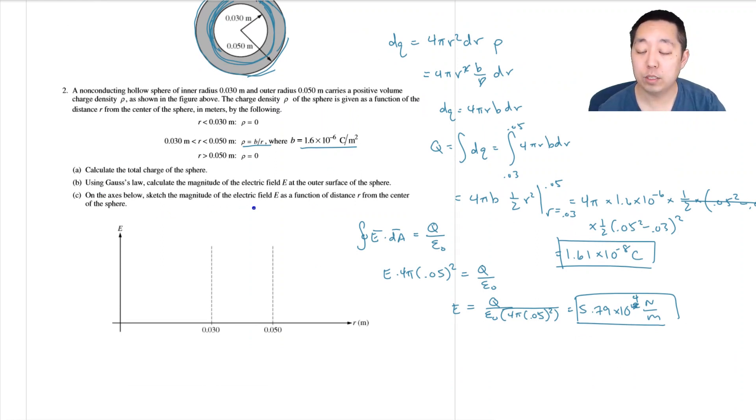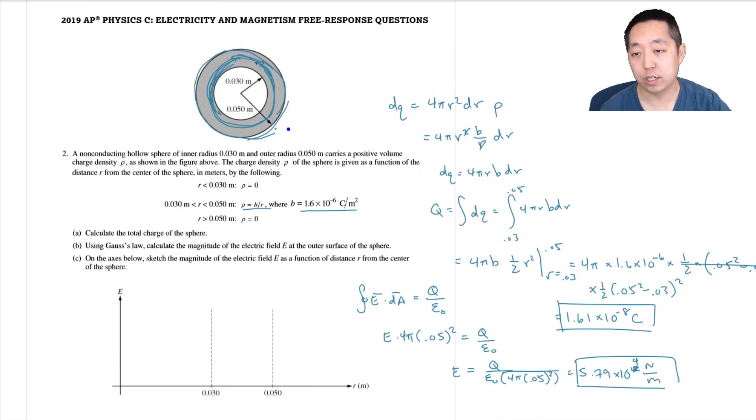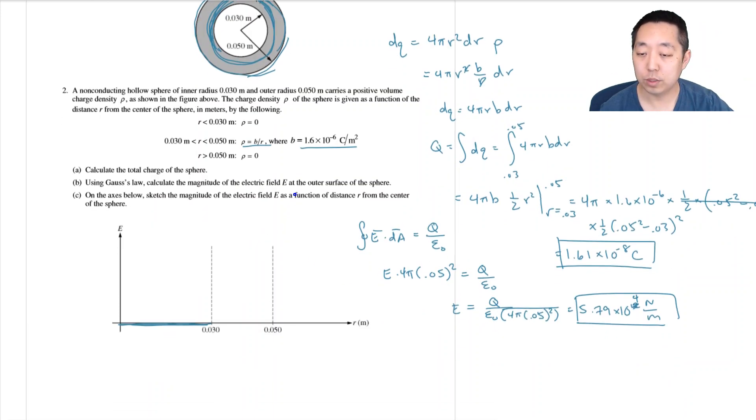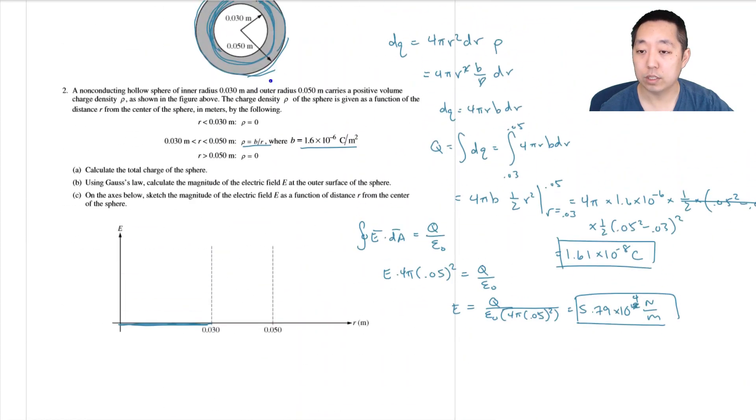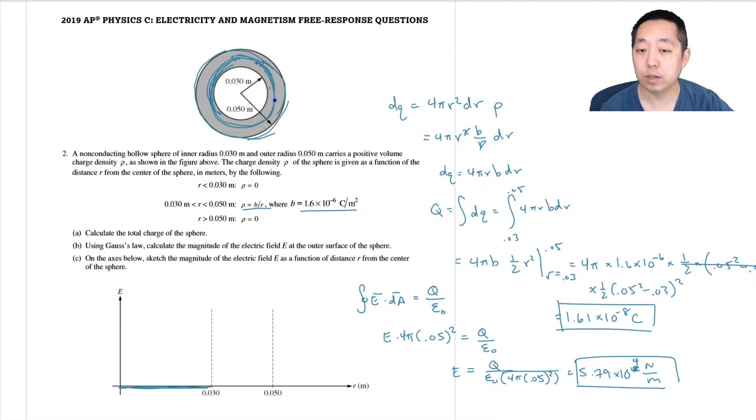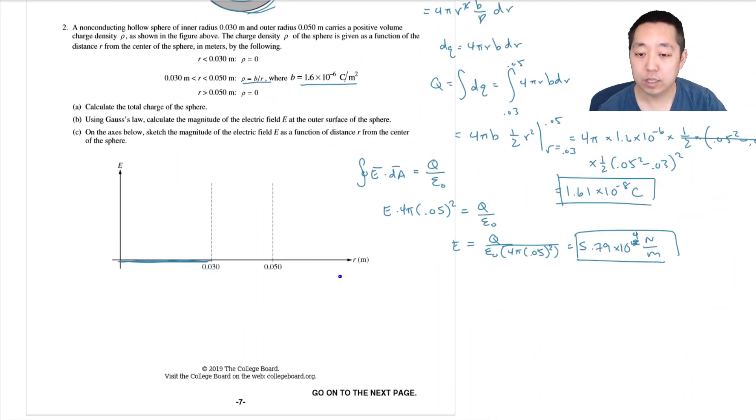On the axes below sketch, the magnitude of the electric field as a function of distance R from the center. So if I look at different Gaussian shells inside this part, I'm not enclosing any charge. So the E field is zero out here. And then the E field is going to increase. So you kind of have to think about, like, how the E field is going to increase. Like, what's the shape of it? So if I take an arbitrary Gaussian surface in the middle of here, I would have the same thing.